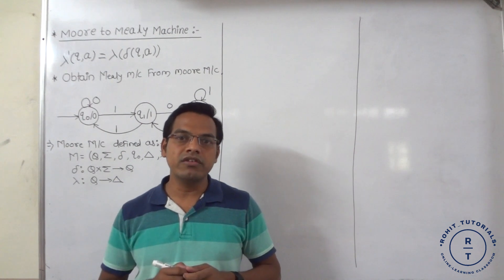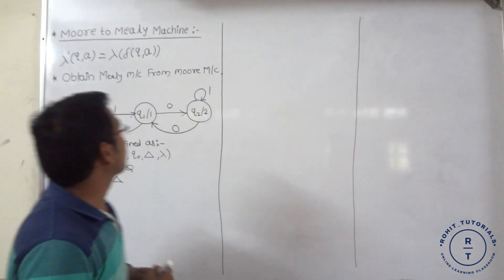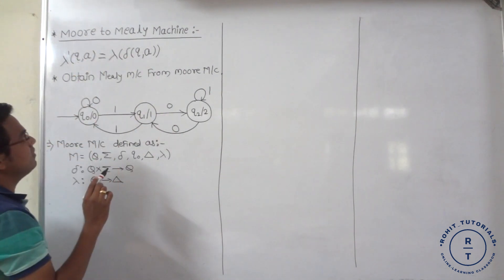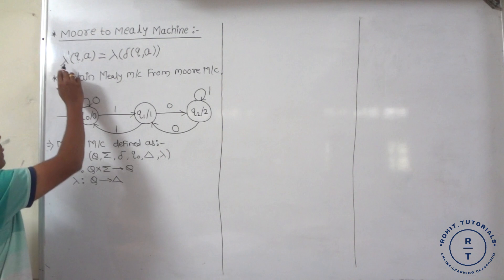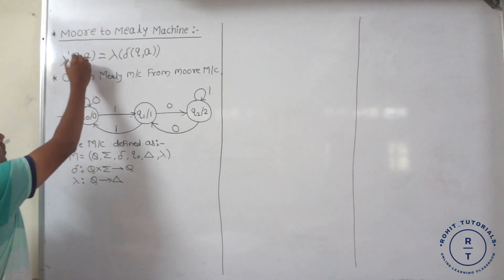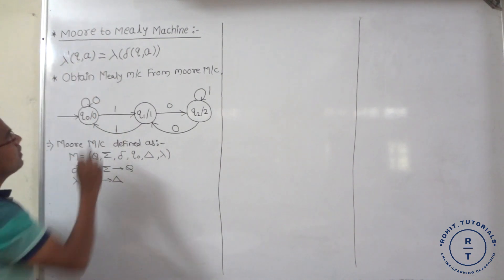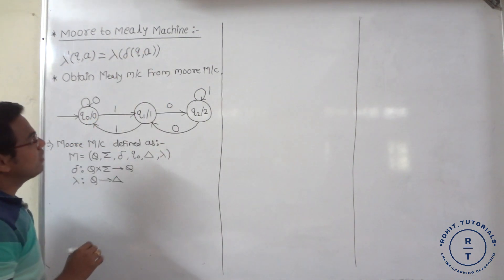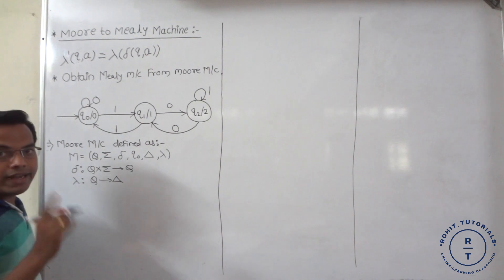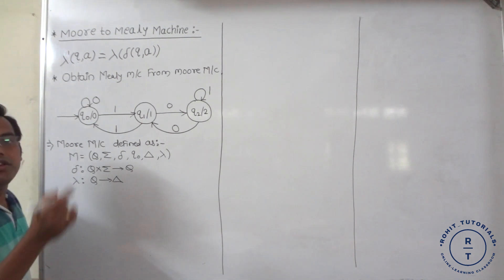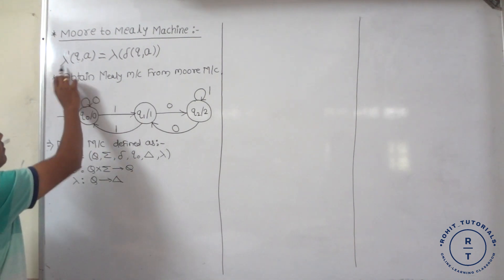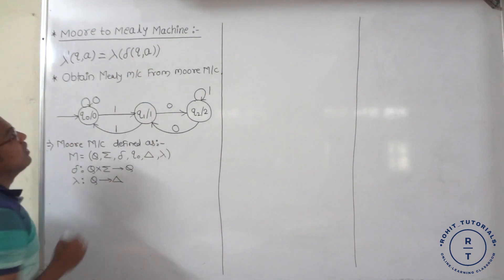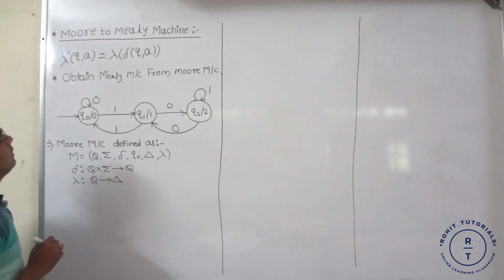Now, the conversion of Moore machine to Mealy machine. When we consider the Moore to Mealy machine conversion, we require the formula: lambda dash of (q, a) equals lambda of transition function (q, a). This is useful for finding or calculating the new machine function. Lambda is the machine function or output function, whereas the transition function is represented by delta.